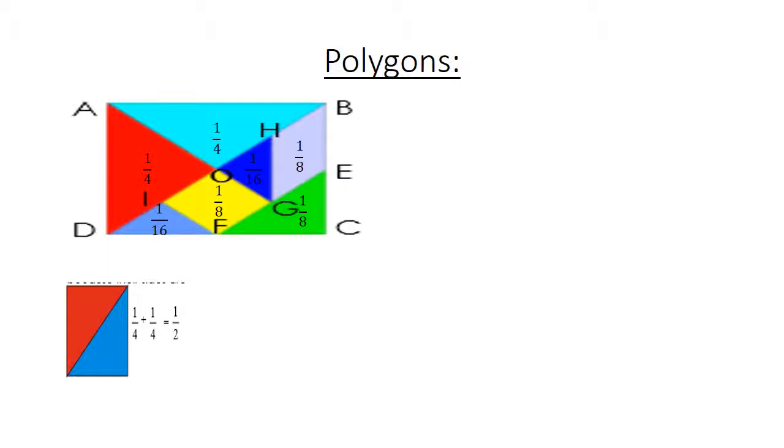We look at the red triangle plus the turquoise one. 1 over 4 plus 1 over 4 equals a half.